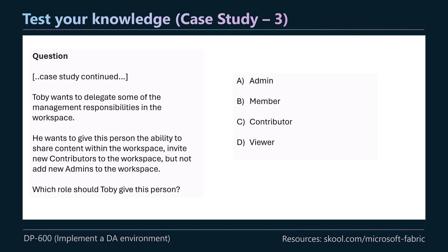Toby wants to delegate management responsibility — giving someone the ability to share content, invite new contributors, but not add new admins. What role should Toby give? The answer is B, member. The key clue is 'but not add new admins' — only admins can add other admins. A member can share content, add members, contributors, and viewers, but cannot add other admins. So member is the correct answer.